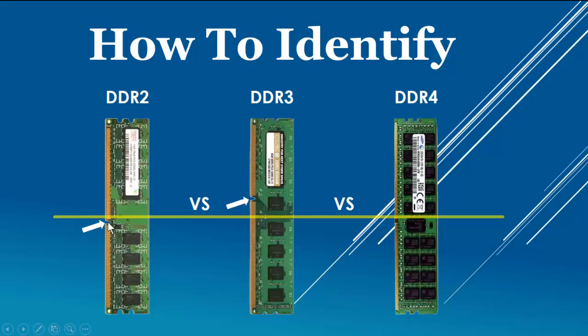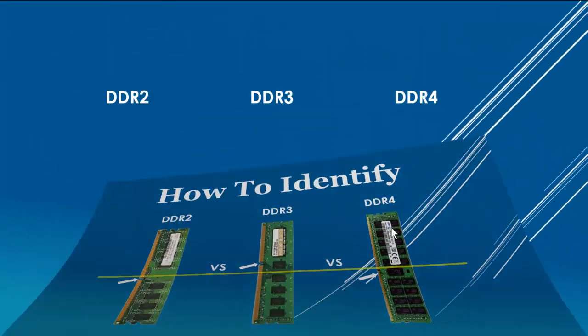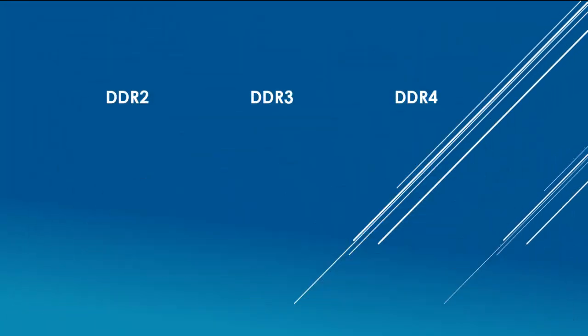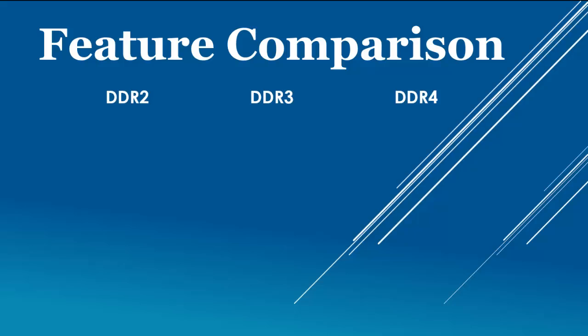In DDR3, this notch is above the center line. In DDR4, this notch is slightly more down as compared to DDR2.